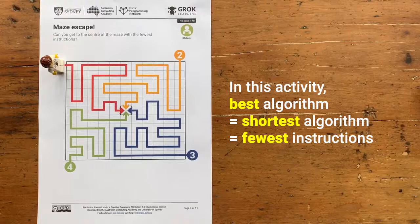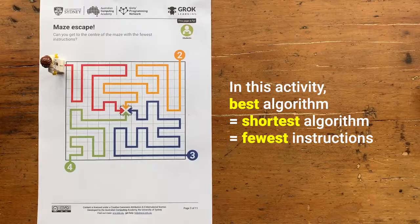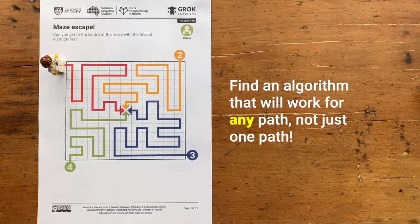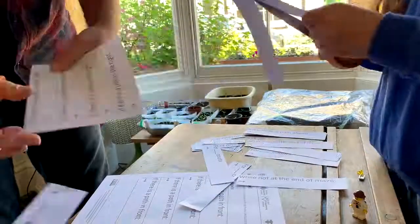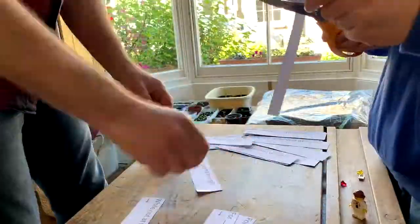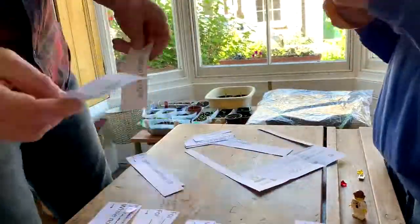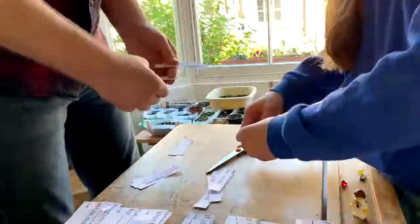In this case, best means shortest. If you can come up with a set of instructions that guide someone through the maze with the least number of steps, you get the most points. And what you really need to do is come up with an algorithm that allows someone to get through the maze — it doesn't matter which one of the paths that they follow. The instructions you can use are given to you on the activity sheets.